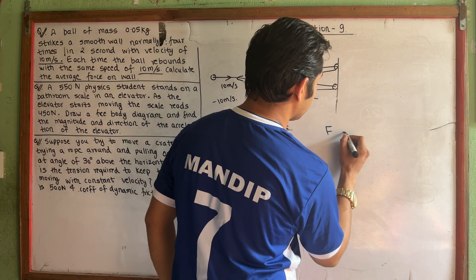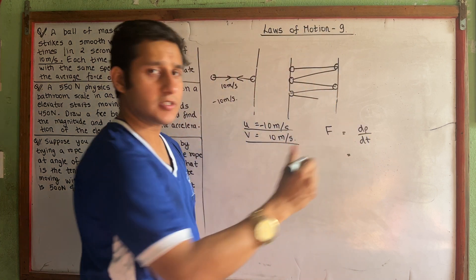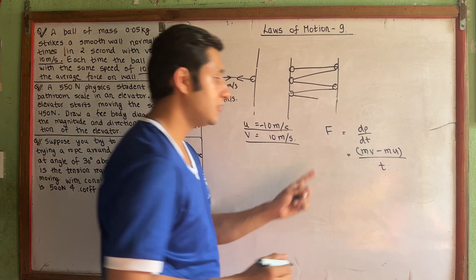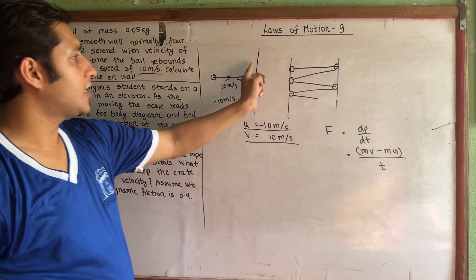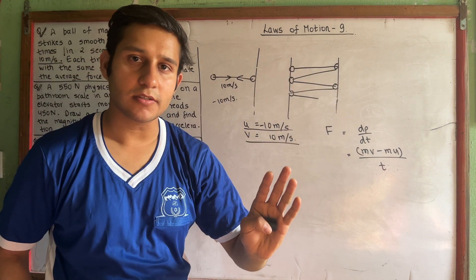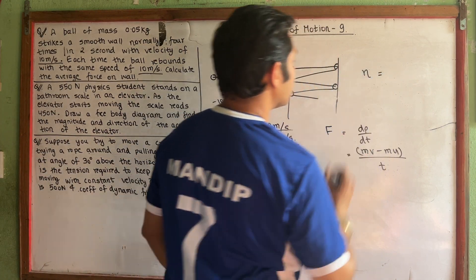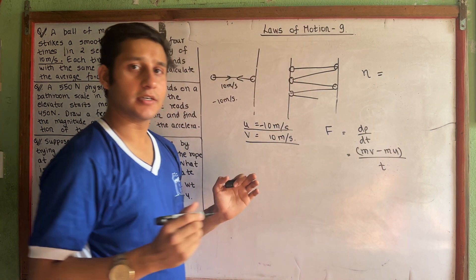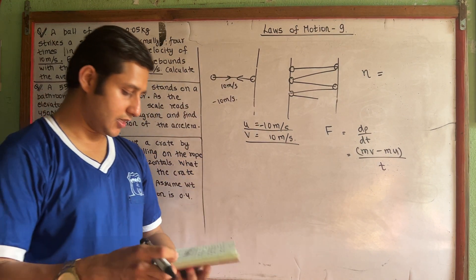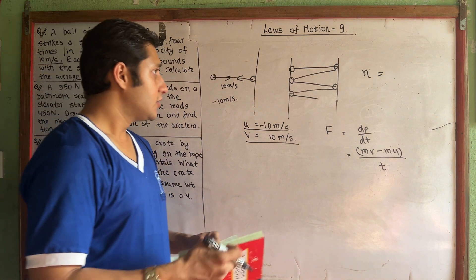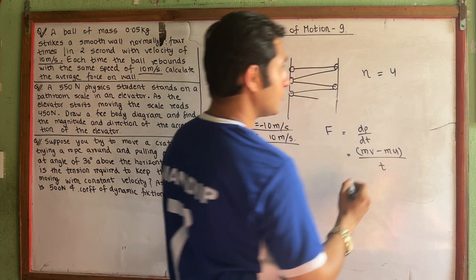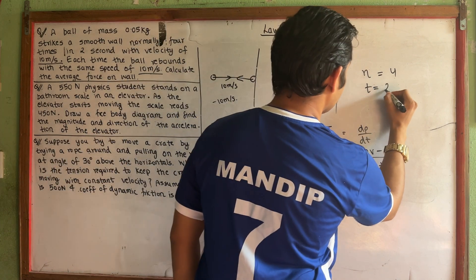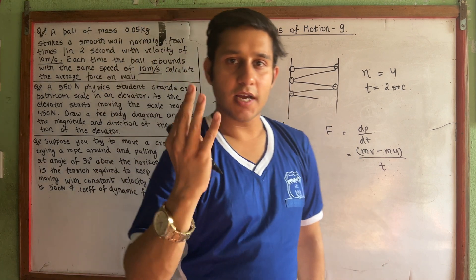What is the force formula? Force formula is simply change in momentum: dp/dt. Change in momentum means mv minus mu divided by time. Four strikes means we multiply m times delta-v by 4. Four times m times delta-v divided by 2 seconds.